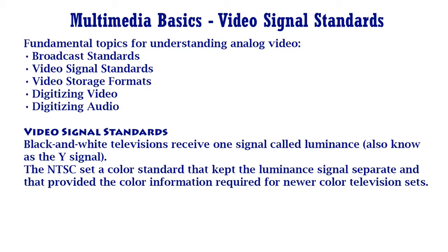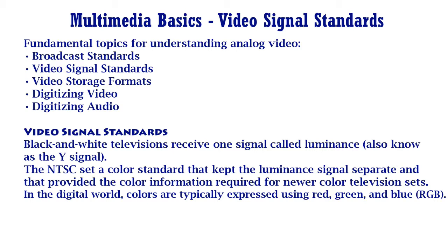In 1953 the NTSC was faced with the task of revising their standard to handle color. To maintain compatibility with older black and white sets, NTSC set a color standard that kept the Luminance signal separate and provided the color information required for newer color television sets. In the digital world, colors are typically expressed using red, green and blue, i.e. RGB. The analog world has also embraced the RGB standard, at least on the acquisition side, where most cameras break the analog signal into RGB components.